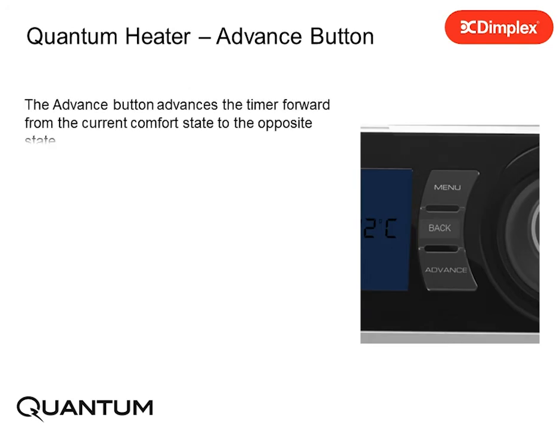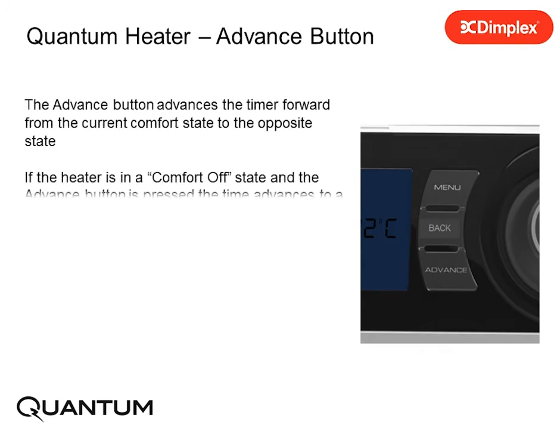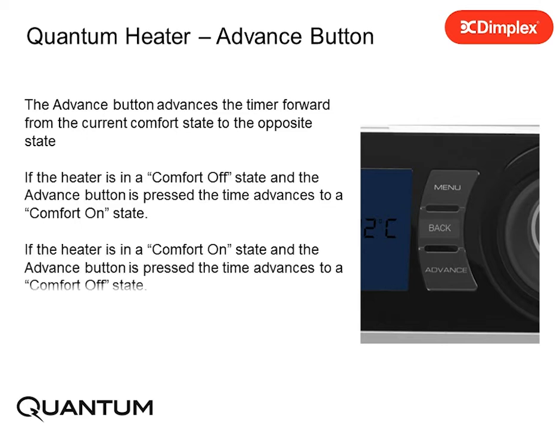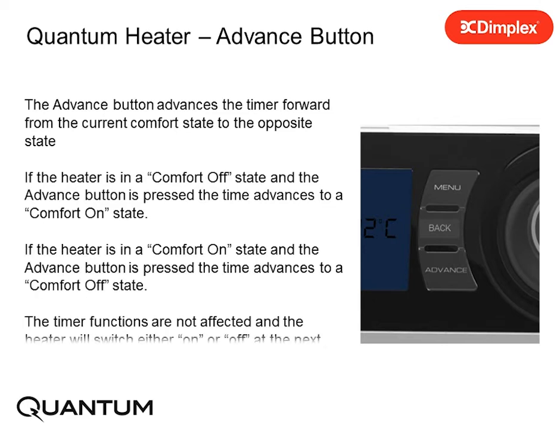The Advance button on the user interface is used to advance the timer function from its current comfort state to the opposite state. If the heater is in a comfort off state and the Advance button is pressed, the timer advances to a comfort on state. If the heater is in a comfort on state and the Advance button is pressed, the timer advances to a comfort off state.